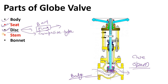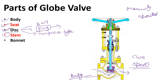Next is the stem. The disk is connected to the stem. The stem has a threaded portion because this valve is a manually operated valve. Sometimes there will not be a threaded portion — there will be a smooth stem when we use an actuator, as in control valves. In that case there will be a smooth stem instead.